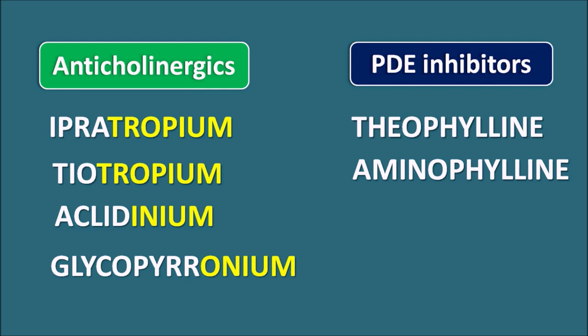These are the various drug targets acting as bronchodilators by directly acting on the bronchial smooth muscle. Mainly we have three types of categories: beta-2 agonists, anticholinergics, and phosphodiesterase inhibitors. That's all for today.